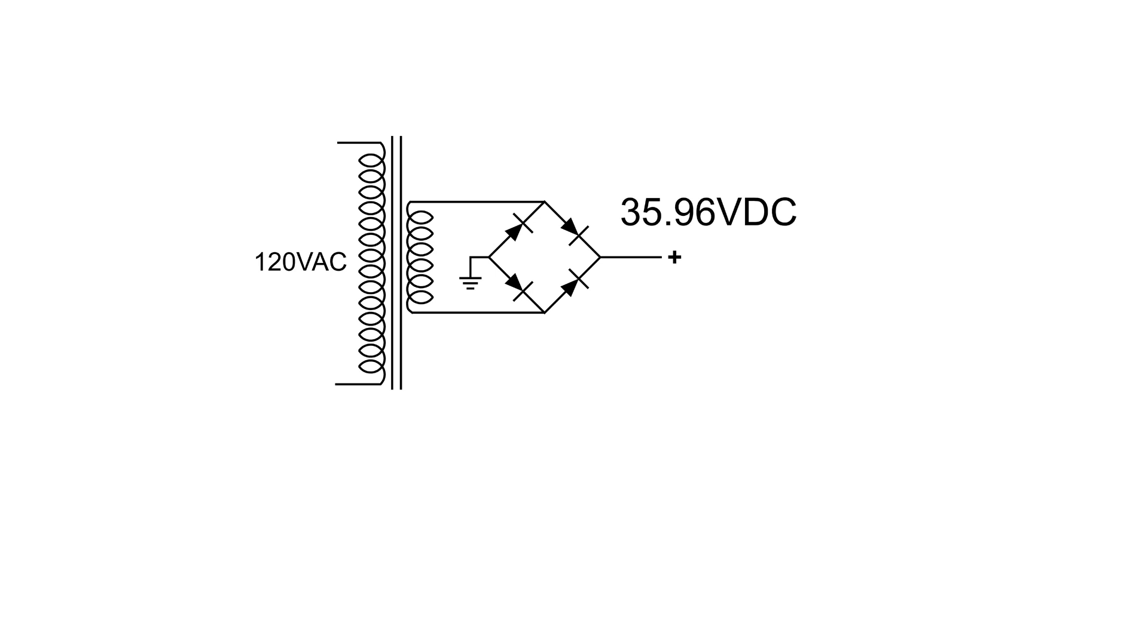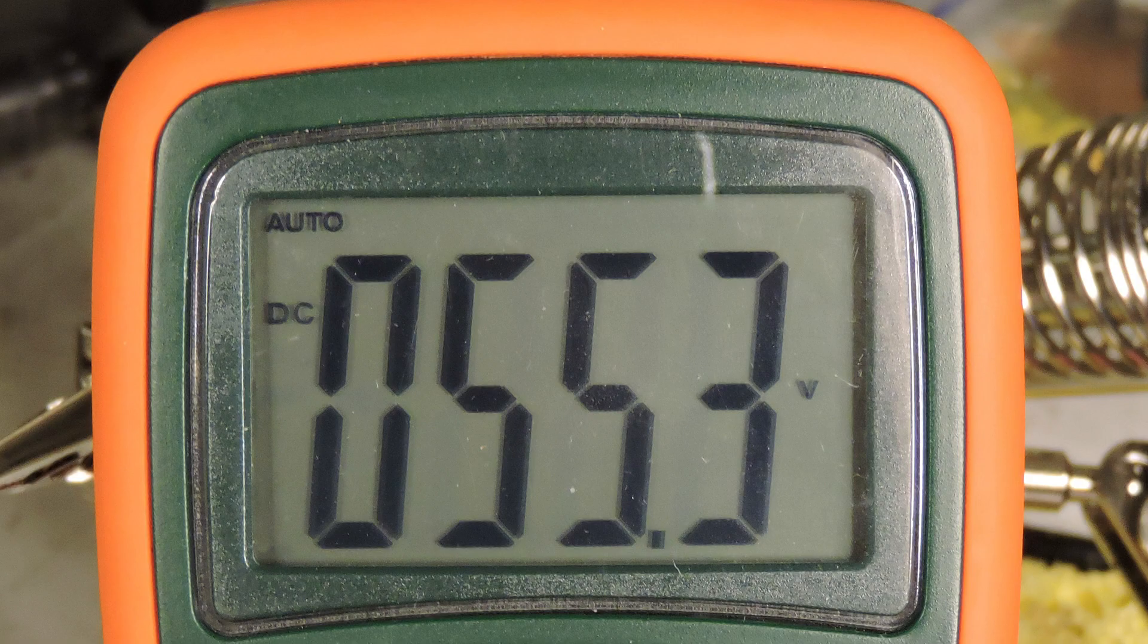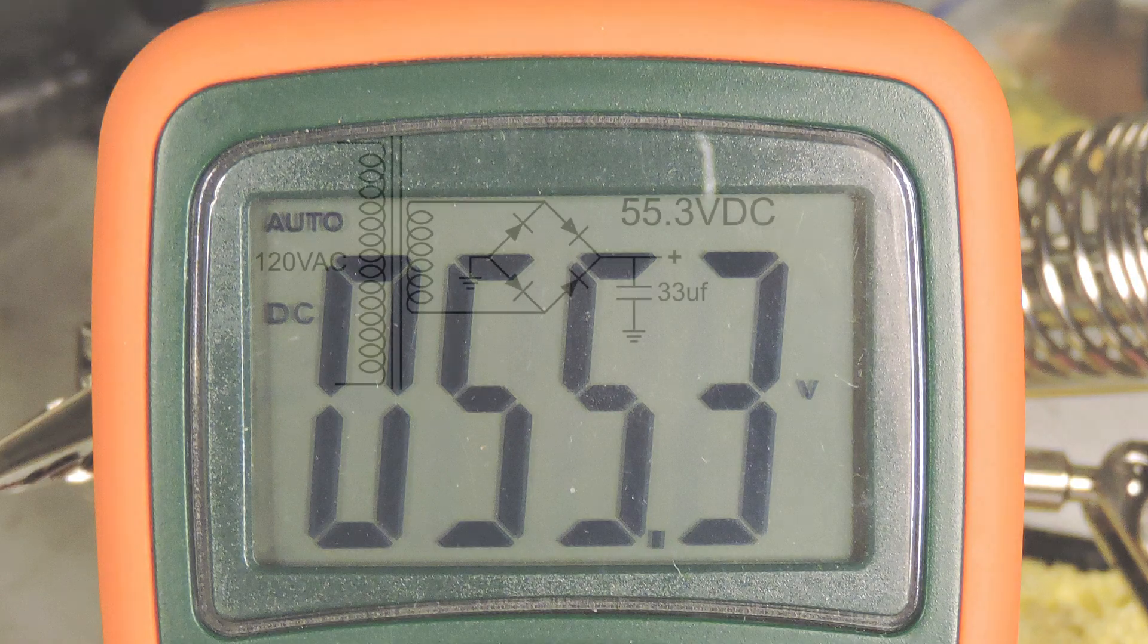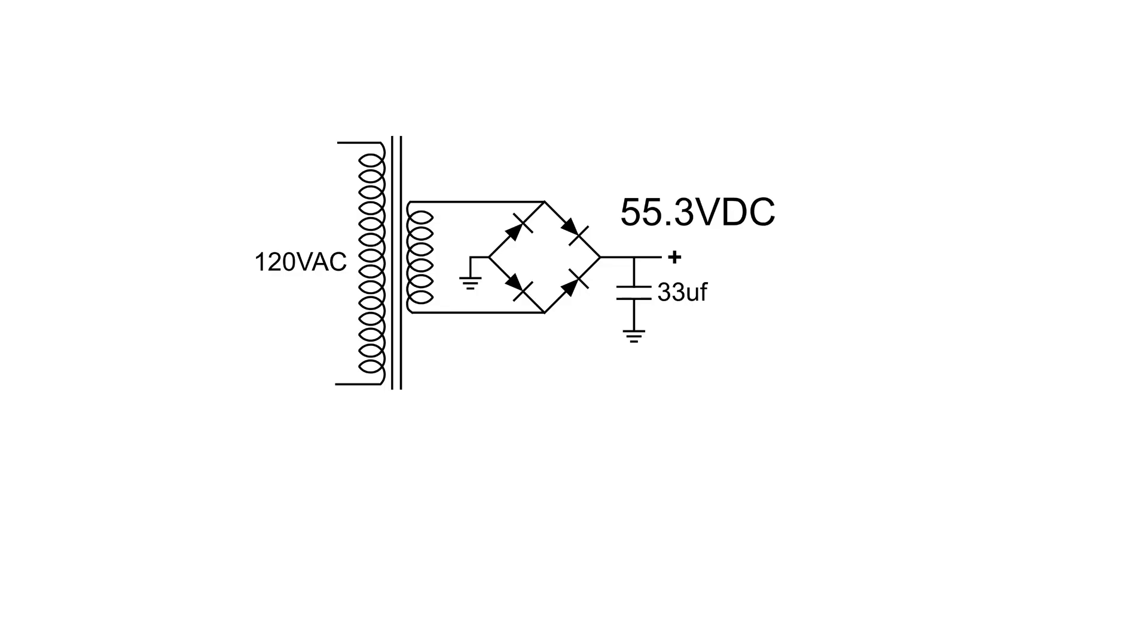I decided to add a capacitor at the output. And it reads 55.3 volts. Well, I want to take this voltage and regulate it to about 35 volts.